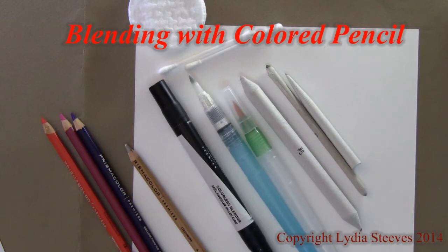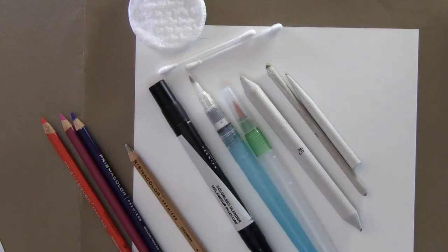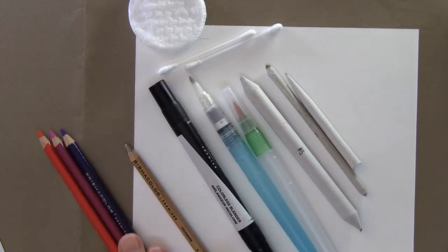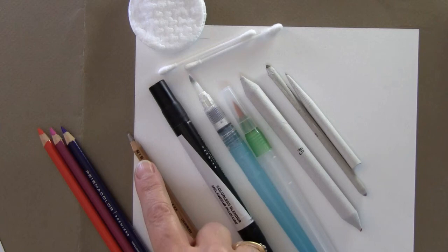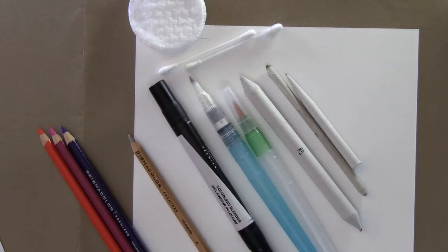This short tutorial will cover some of the different methods that we can achieve blending with colored pencil. Layering two or more colors creates an optical or visual blending. A colorless blender is just wax in pencil form and that can unify your two or three colors or smooth out your pencil strokes.